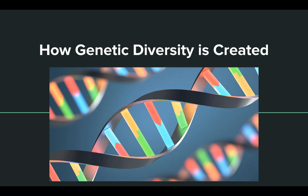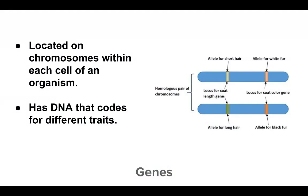Now let's look at how genetic diversity is created — this should be a quick review from your biology classes. We know we have our genes, which are located on chromosomes, and the DNA in the gene codes for different traits. It's important to point out that we have alleles. Alleles represent the same trait — for example, an allele for hair — but they determine whether the hair is short or long, or the color of the hair. Alleles are that small, minute variation, but the trait itself is the same.